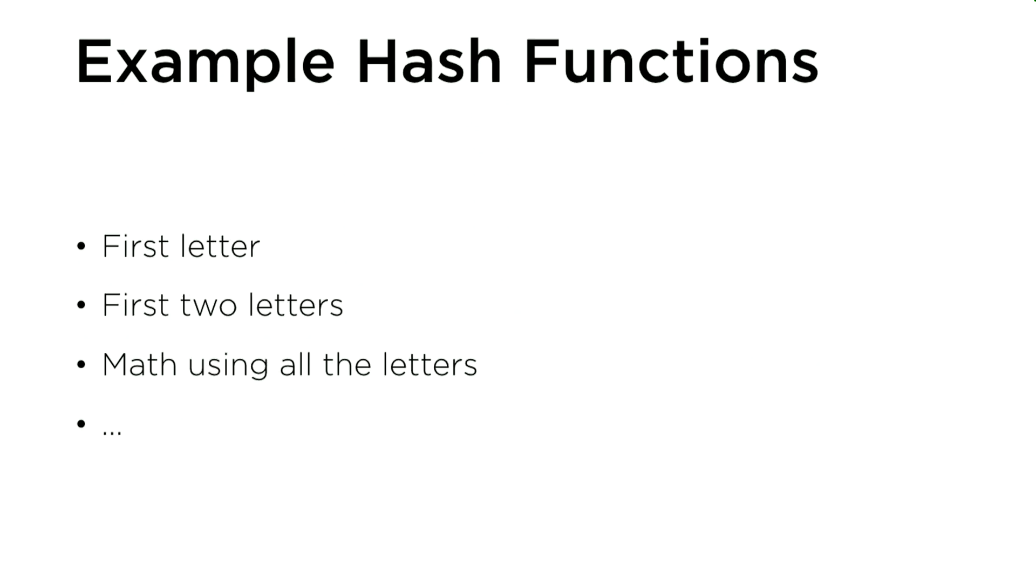Now, what are some examples of some hash functions? Well, a very simple hash function might just take the first letter of the word. If the first letter of the word is a, then the hash value is going to be 0. If the first letter of the word is b, the hash value is 1, so on and so forth. If the first letter of the word is z, the hash value might be 25. In this case, your value of n is 26 because you'd have 26 different buckets, one for every letter of the alphabet.